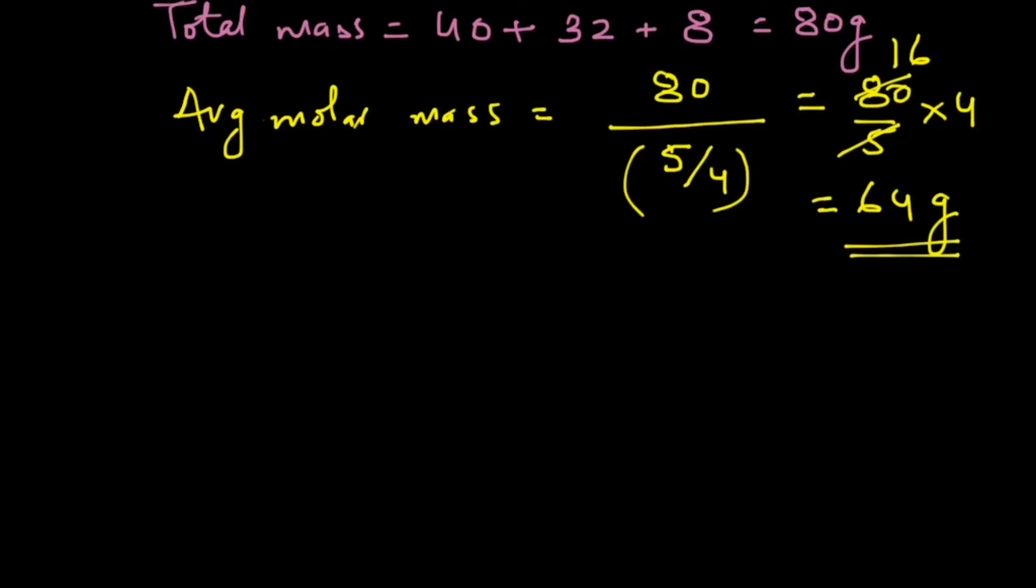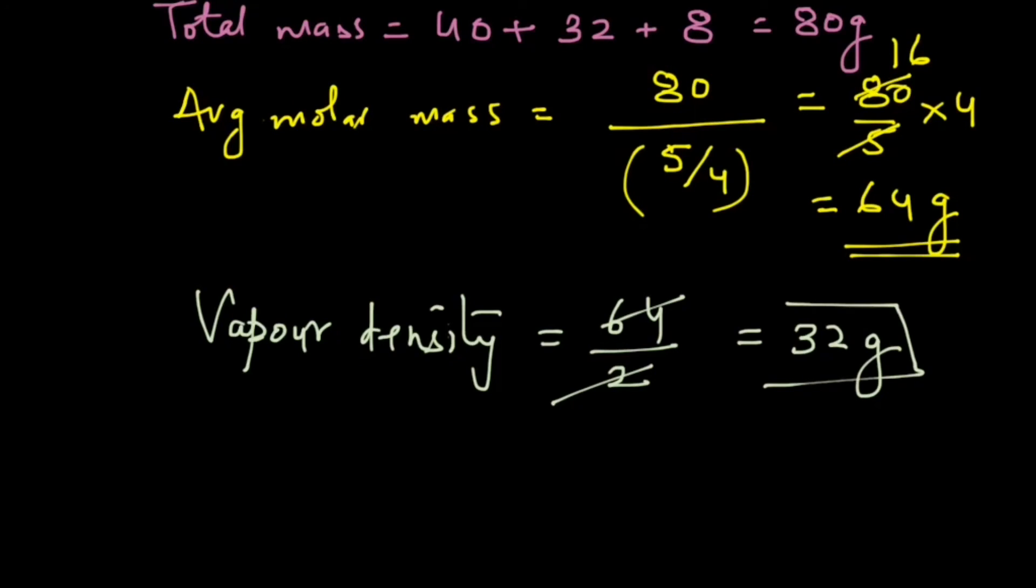Now that we have the average molar mass, we can easily calculate the vapor density, and vapor density will come out to be 64 upon 2, and that gives you 32 grams. That is the answer. See you.